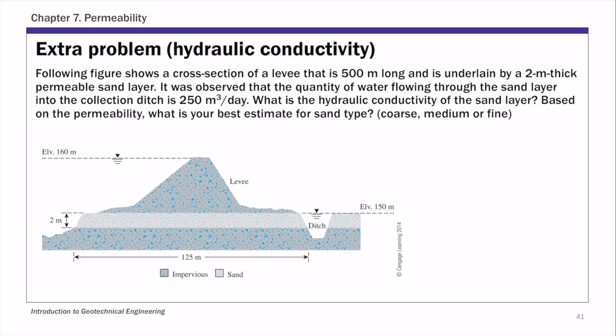This is an extra example problem for Chapter 7 Permeability. We are given a cross-section of a levee that is 500 meters long into the paper, so we're showing a 2D view of this levee. We know the thickness of the permeable sand layer is 2 meters.